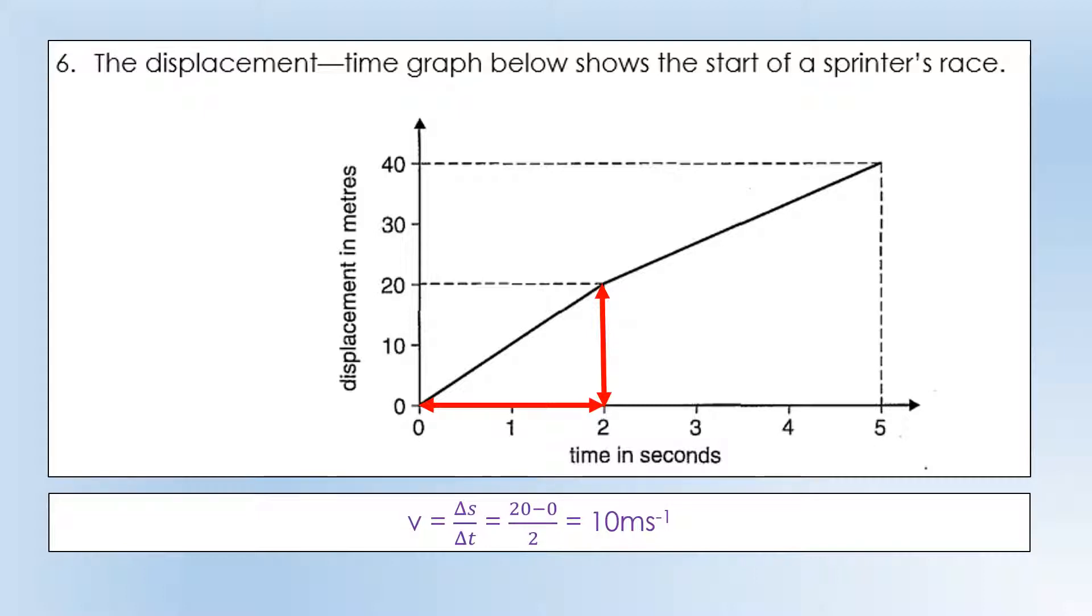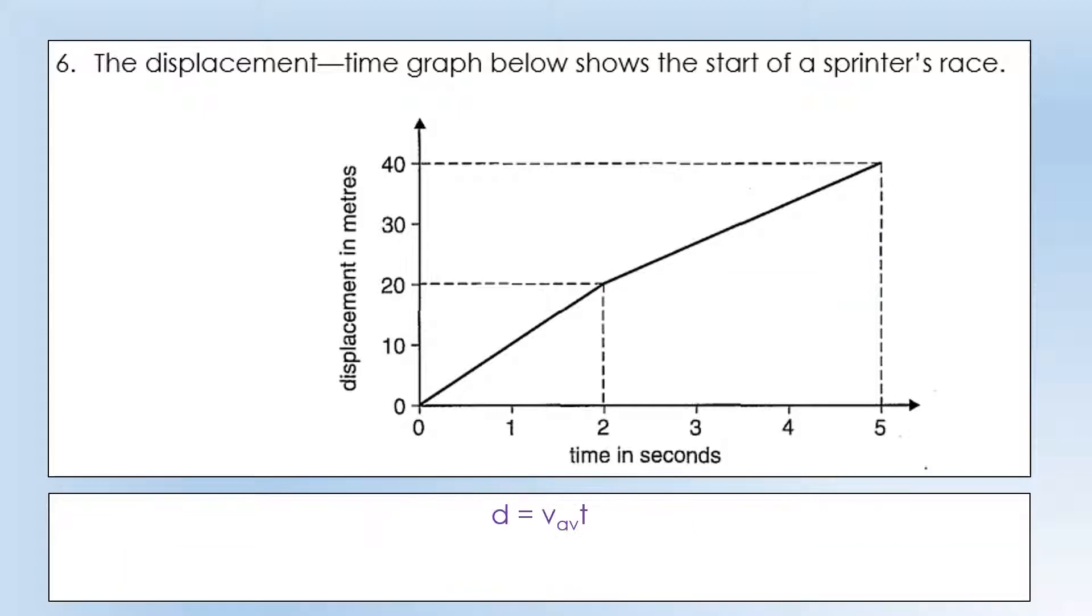Next, we want to calculate the new velocity afterwards. Again, we're going to do the same thing, change in displacement over change in time. That gives us our velocity. And then finally, figuring out how far it's traveled. The most simple thing to do is look at the y-axis and see it's 40, but we can actually prove it using the average velocity times time. During the first section, the average velocity is 10. During the second section, the average velocity is 6.6. We add those two together and we get 40.